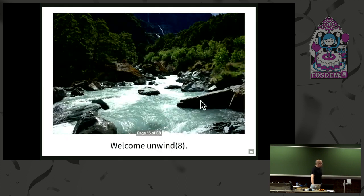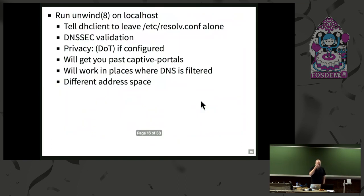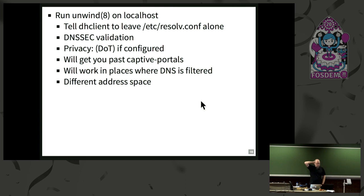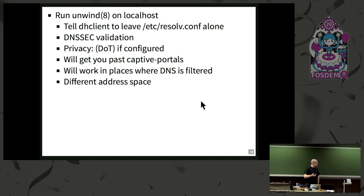So what does Unwind promise? Again, we're taking over resolv.conf. We get DNSSEC validation. We get DoT if we configure it. It will get you past captive portals. It will work in places where DNS is filtered, and it runs in a different address space.